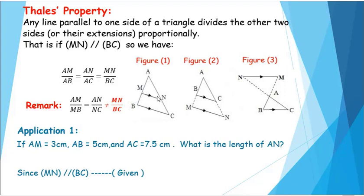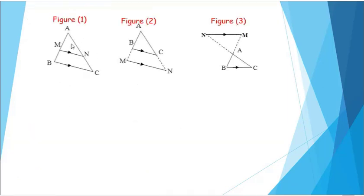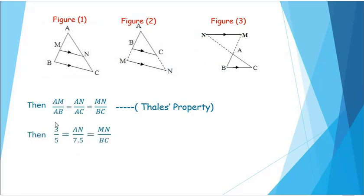Since MN is parallel to BC, then AM over AB equals AN over AC equals MN over BC. This relation is Thales' property. Now we substitute the values of AM, AB, and AC in this relation. We get 3 over 5 equals AN over 7.5.